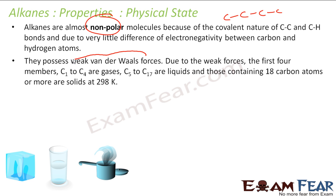Alkanes have very weak van der Waals force. Due to this weak van der Waals force, the first four — C1 to C4, that is methane, ethane, propane, butane — are gases. Then from pentane to C17, they are liquids. And C18 and above are solids.